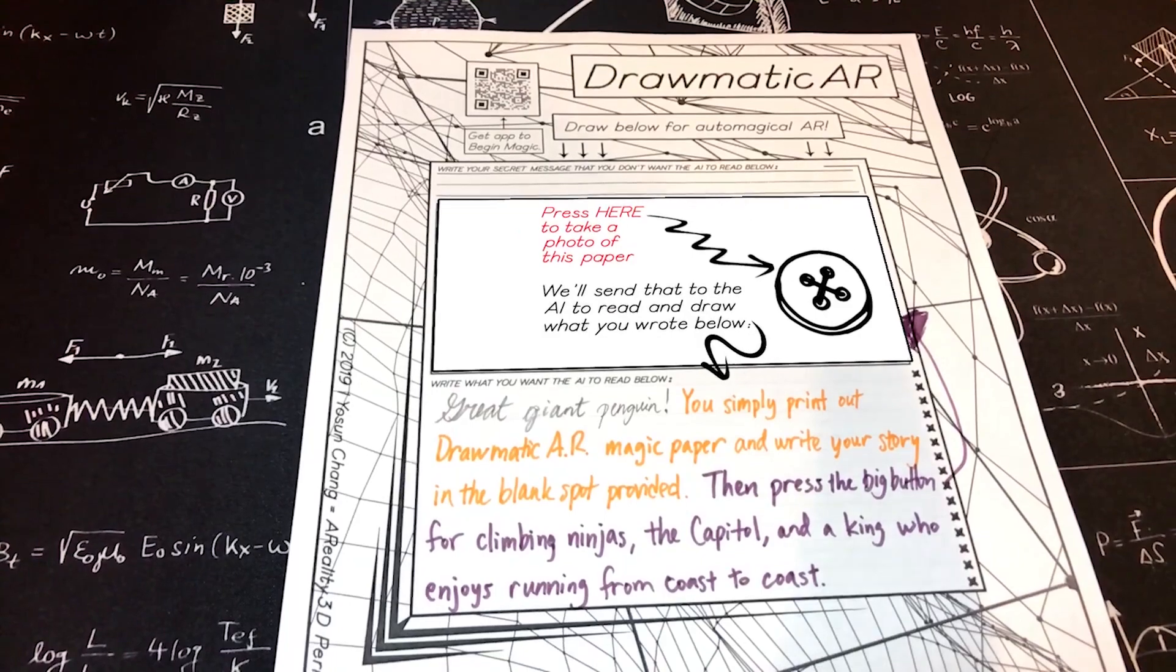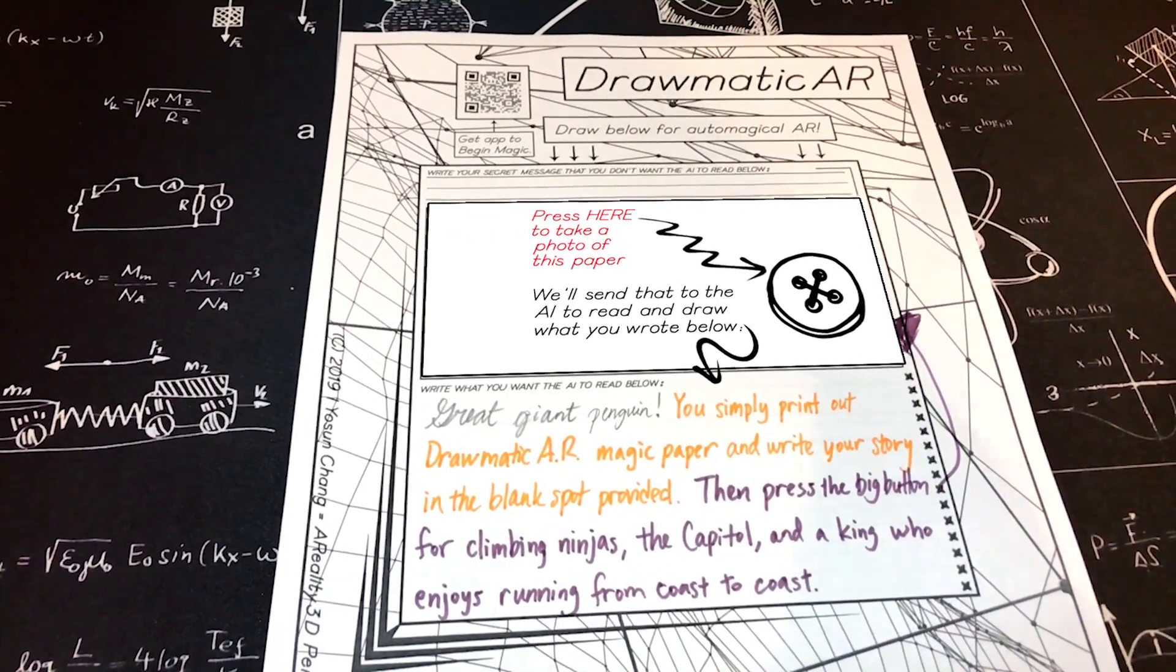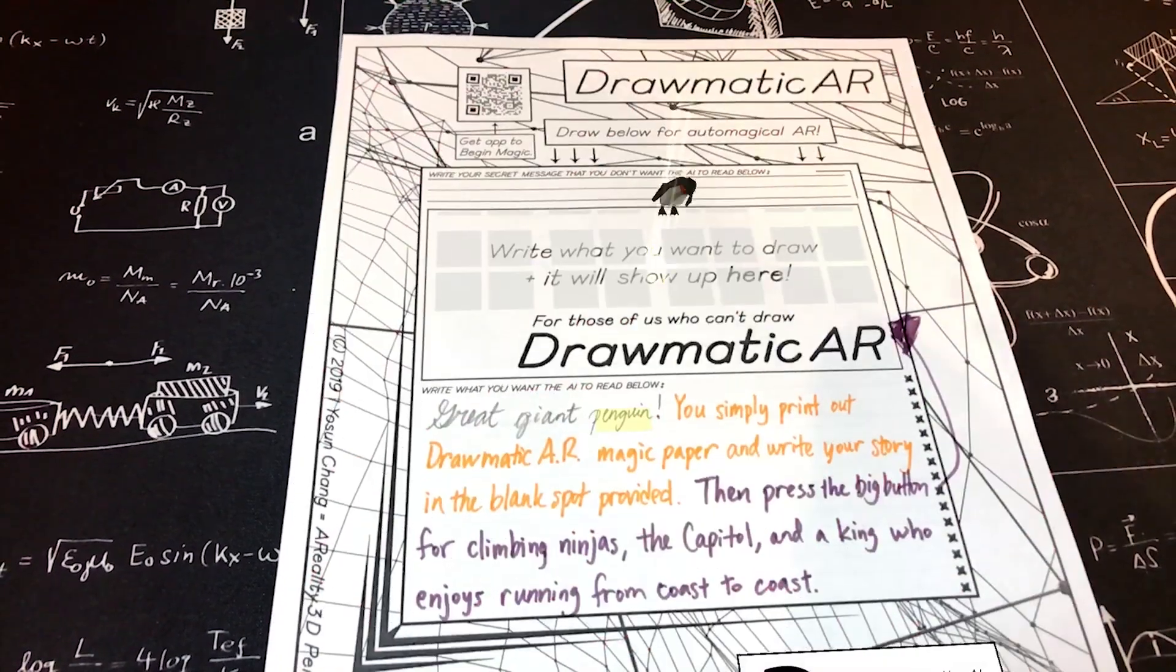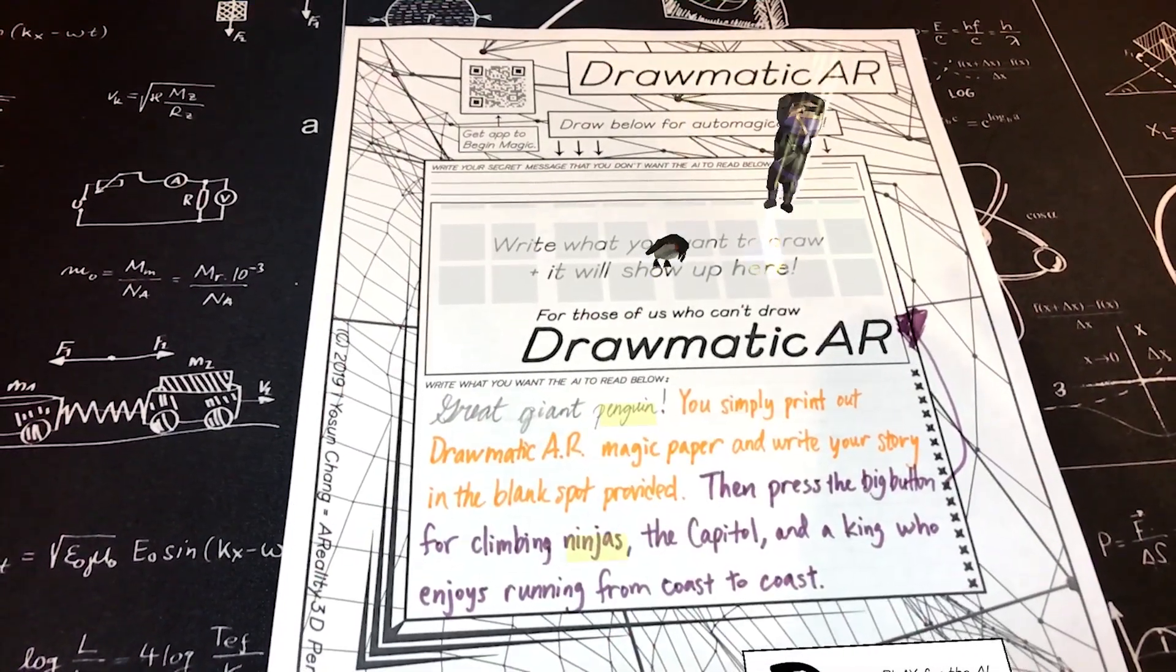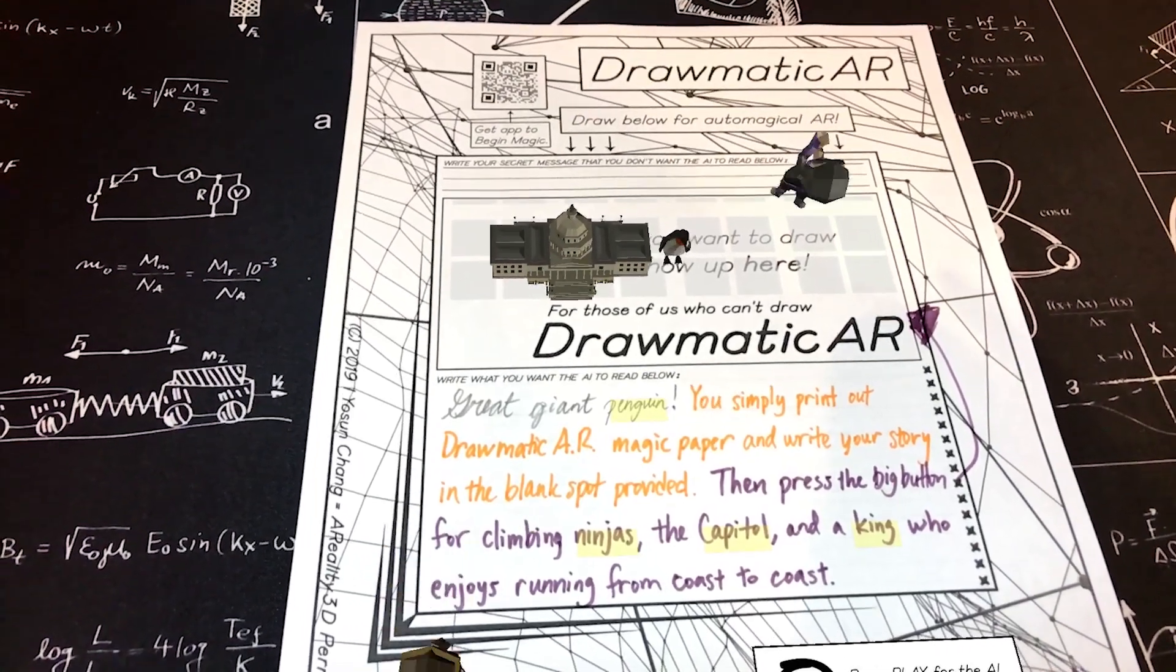Great Giant Penguin, you simply print out Dramatic AR Magic Paper and write your story in the blank spot provided. Then, press the big button for climbing ninjas, the capital, and a king who enjoys running from coast to coast.